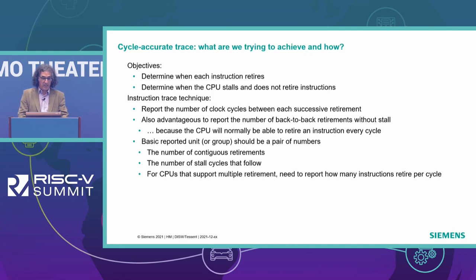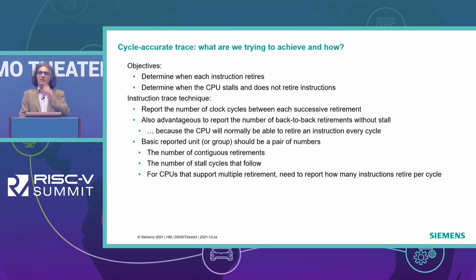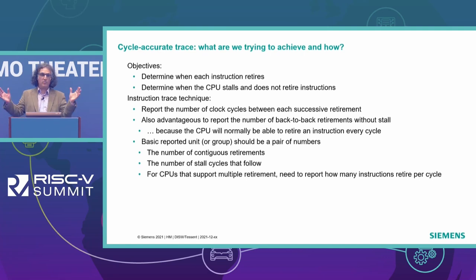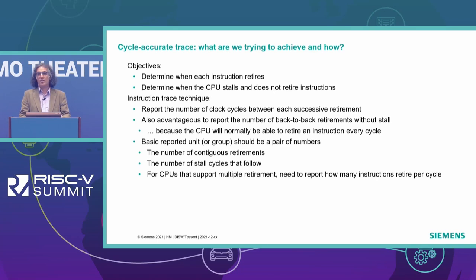For cycle-accurate trace, the technique being deployed is to report the number of clock cycles between each successive retirement. For example: instruction A retired at clock zero, instruction B retired one clock later, then maybe a stall for five clocks, and so on. It is also advantageous to report the number of back-to-back retirements without stall between them, because we can amortize the reporting of that group into a smaller trace packet. Modern CPUs can retire an instruction every clock cycle, hopefully more often than not, giving good opportunity for compressing the amount of information sent.